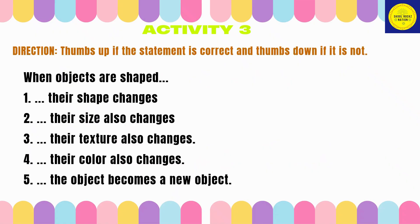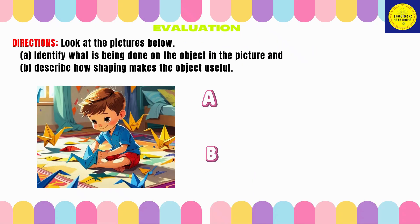For our next activity, thumbs up if the statement is correct and thumbs down if it's not. When objects are shaped: Number 1 — their shape changes. Thumbs up! Number 2 — their size also changes. Thumbs up! Number 3 — their texture also changes. Thumbs down! Number 5 — the object becomes a new object. Thumbs down!